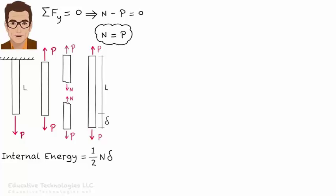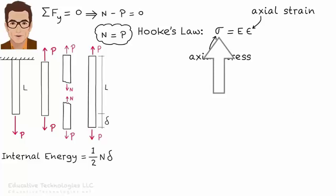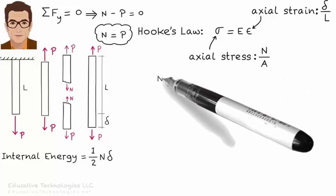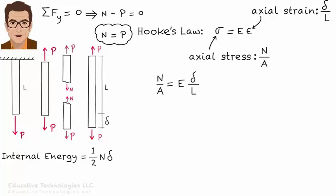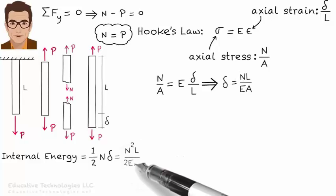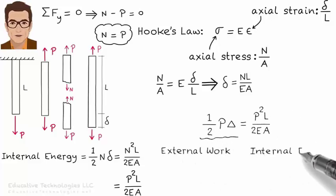We use the relationship between stress and strain for this. Since we have assumed linear elastic material behavior, Hooke's Law applies. That is, axial stress in the member equals the material's modulus of elasticity times the member's axial strain. Since axial stress equals N over A and axial strain equals delta over L, we can write this equation. Or delta equals NL over EA. Then the member's internal energy can be written as one half times N squared L over EA. Since N equals P, we get internal energy equals one half times P squared L over EA. Since external work equals internal energy, we can write this equation. So there you have it, the work energy principle in algebraic form.